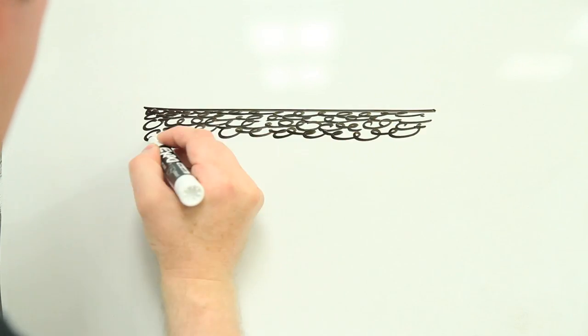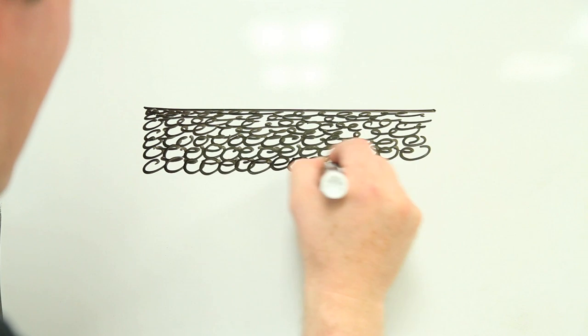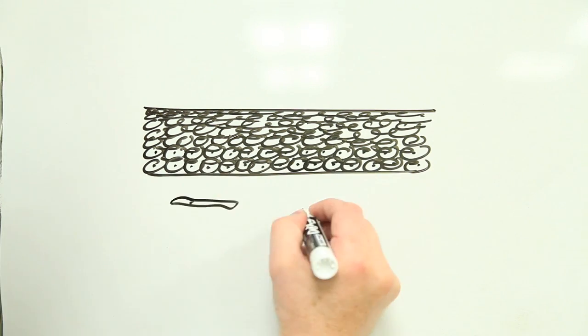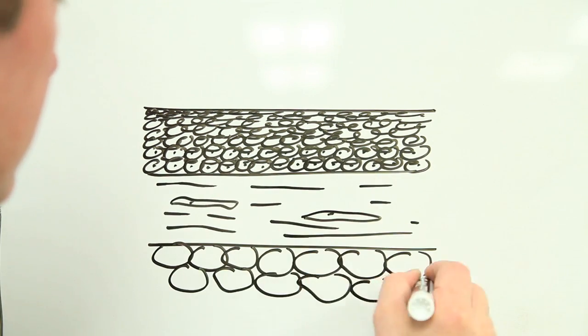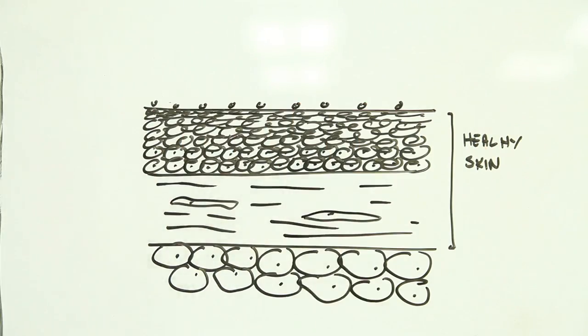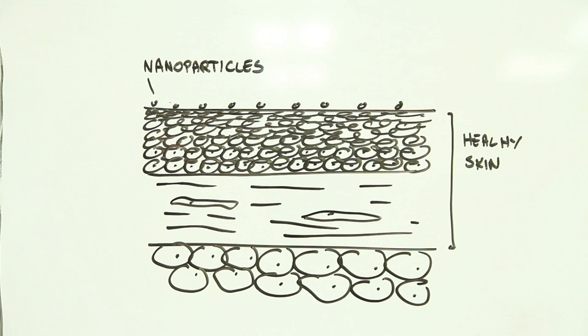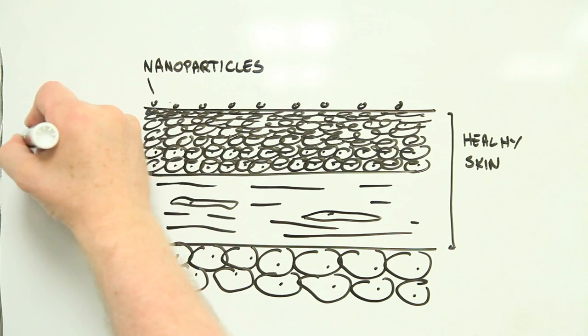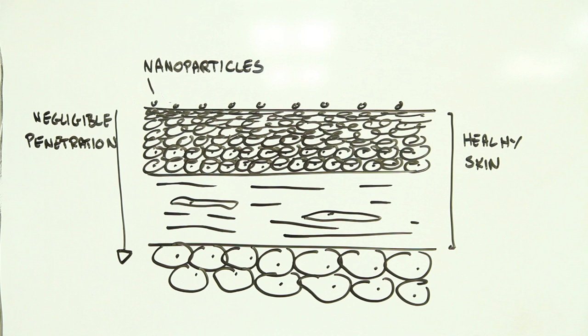Number one: nanoparticles in sunscreens stay on top of your skin and don't pass through it. When manufacturers started to use these miniscule particles, researchers wondered whether they could in fact slip in between your skin cells or even get into the cells themselves. Fortunately, after several years of research, it looks like healthy skin is great at preventing nanoparticles getting into your body.